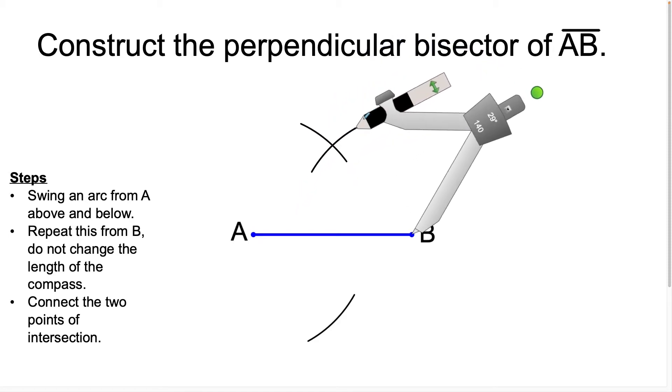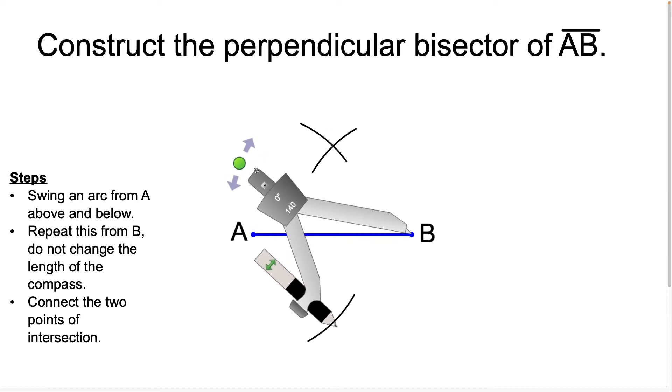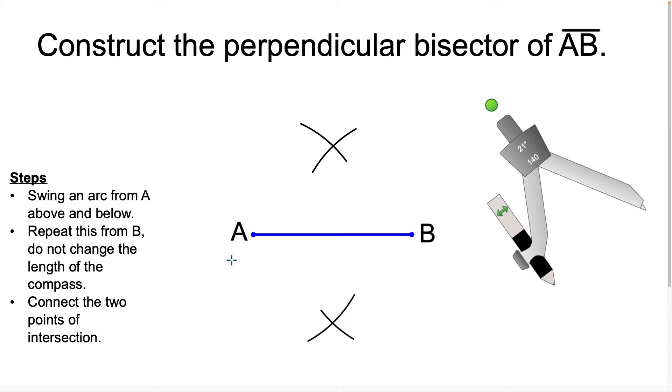So we're going to swing the arc above and we're going to repeat this process. We're going to swing the arc below like this, and now we have two points of intersection. So all we're going to do now is connect these two points at the points of intersection like this, and we can extend the top one just a little bit so that it goes through.